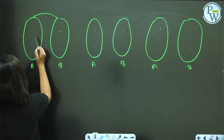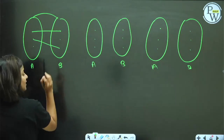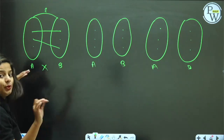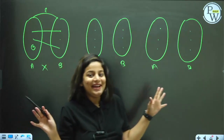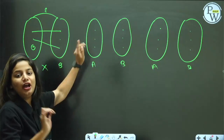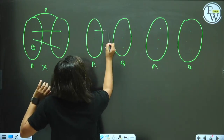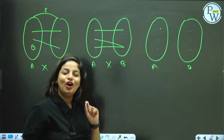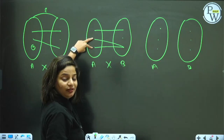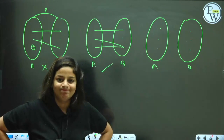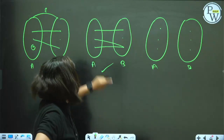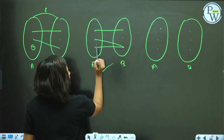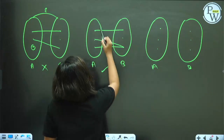Is it a function? No, it is not a function — not all inputs have an output. What about this one? It is a function! Each input has an output, and each input has one and only one output. This has only one output, this has only one output, this has only one output — so it qualifies to be a function.